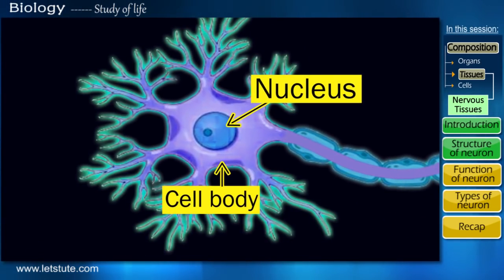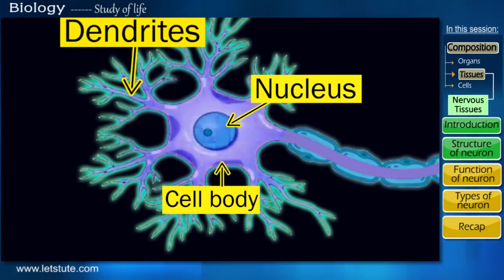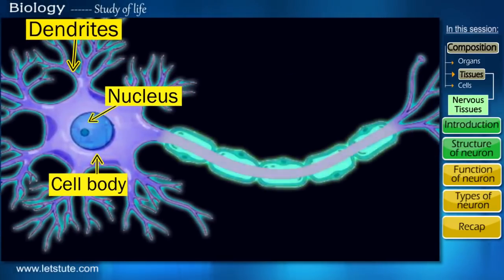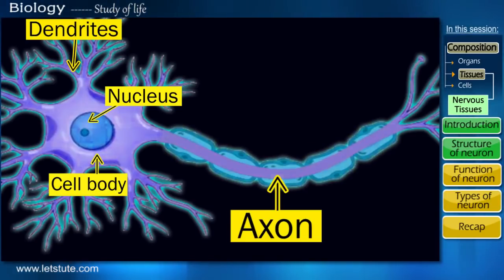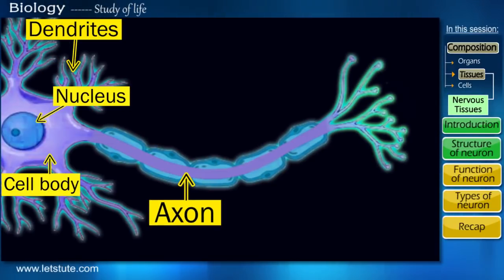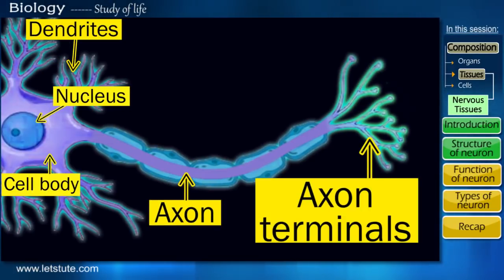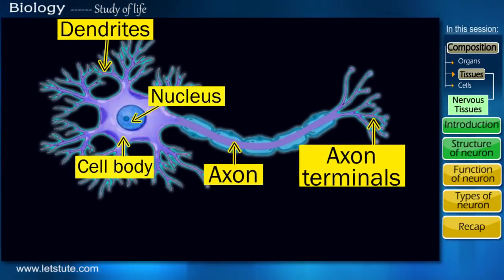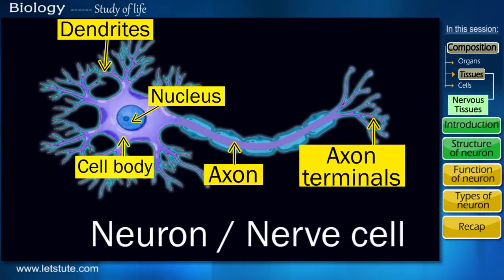And from the cell body, a few thread-like projections are extended called dendrites. But there's this one projection that extends further to form a long filament called the axon. This axon ends into root-like branches called the axon terminals. A cell with such a shape is called a neuron or nerve cell.